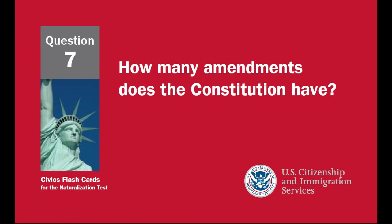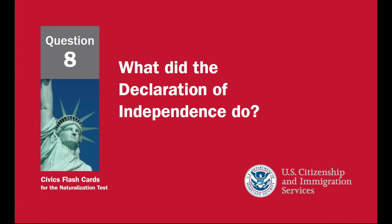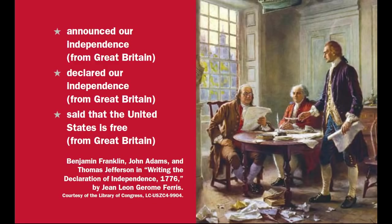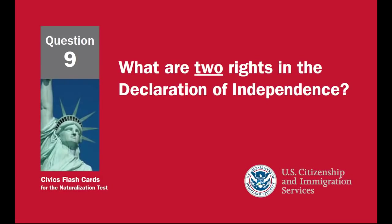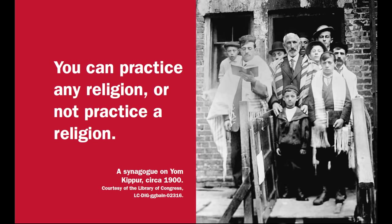How many amendments does the Constitution have? 27. What did the Declaration of Independence do? It announced our independence from Great Britain, declared our independence, and said that the United States is free from Great Britain. What are two rights in the Declaration of Independence? Life, liberty, and the pursuit of happiness. What is freedom of religion? You can practice any religion or not practice a religion.